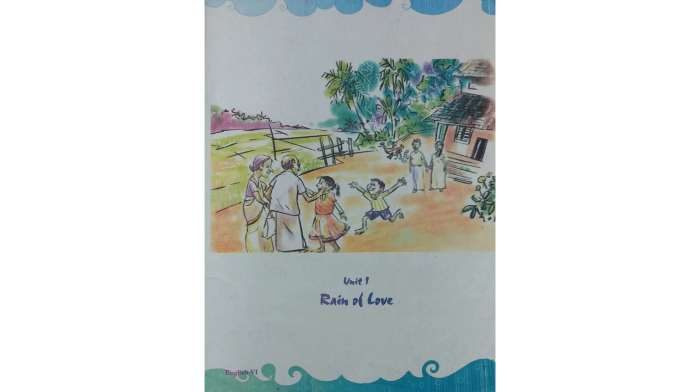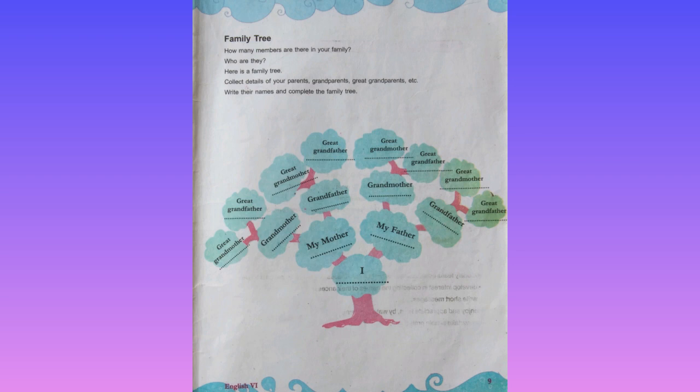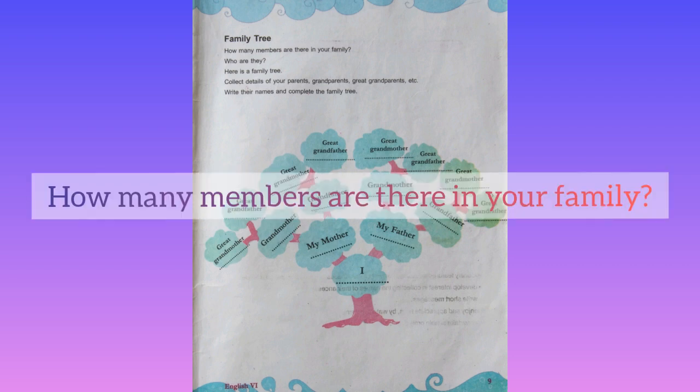Page number nine. You can see here a family tree. What is a family tree? What is the meaning of 'family'? Family means 'kudumbam.' Family tree means 'kudumbam aram.' How many members are there in your family?